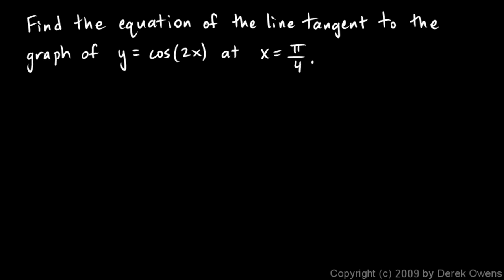In this one we're told to find the equation of the line tangent to the graph of y equals cosine 2x at x equals π over 4. So first let's find the y value, the value of the function at that x value.